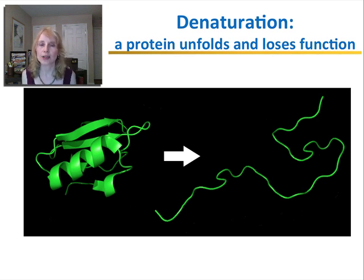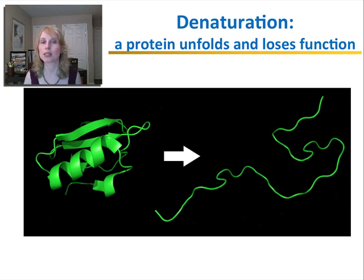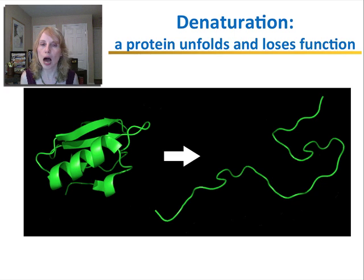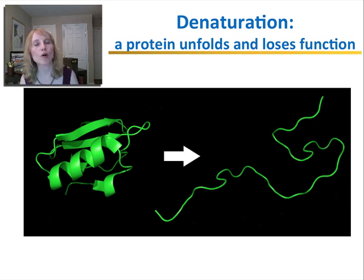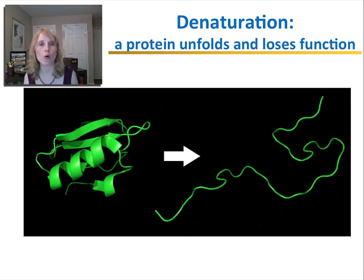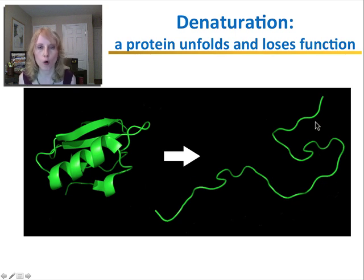Sometimes proteins can actually unfold, and this process is called denaturation — a protein becomes denatured, meaning it unfolds. This can happen at high temperatures, where the hydrogen bonds that hold the protein together can be broken, or in very acidic or basic environments, which disrupt the ionic bonds that hold acidic and basic amino acids together. If either the acid-base interactions or the hydrogen bonds are disrupted, the three-dimensional shape can be lost and the protein unfolds. This can be very dangerous because the shape of the protein is critical to its function.